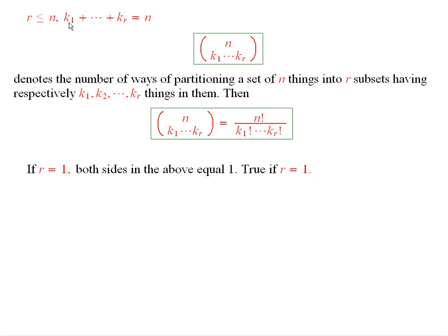One of them has k1 things in it, the next one has k2 things in it, and so on up to the rth, which has k sub r things in it. We denote the number of ways of doing this by this symbol here.